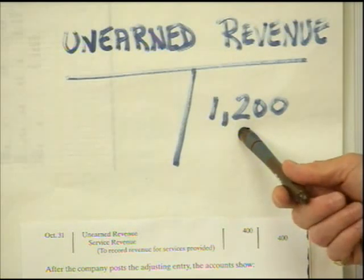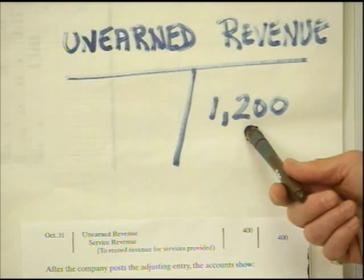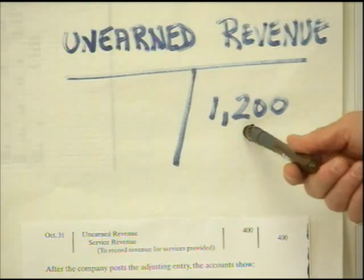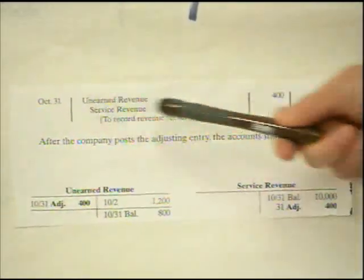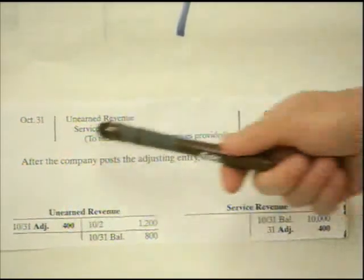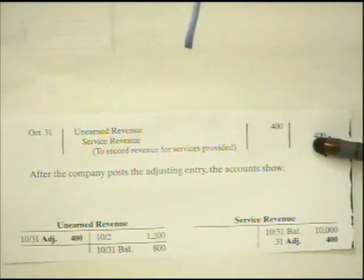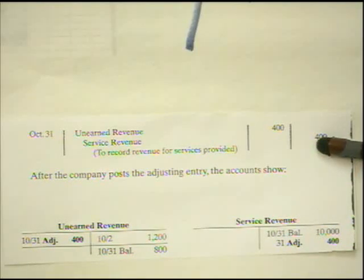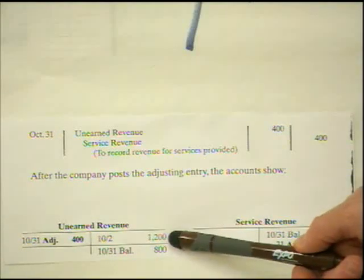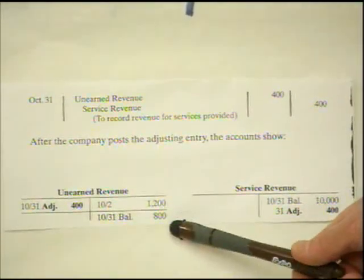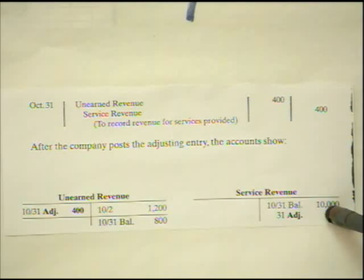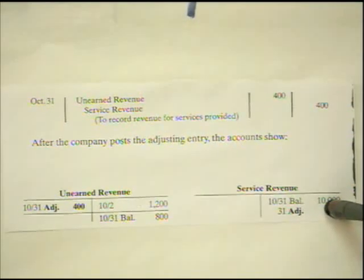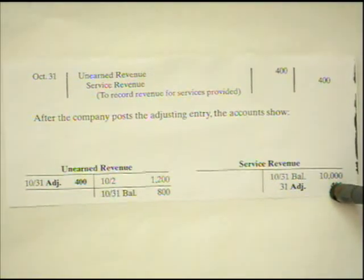Let's say we're producing six units at $200 each — six times $200 equals $1,200. At the end of the month, if we've produced two of those units, we've earned $400. The entry: debit unearned revenue $400, credit service revenue $400. This removes $400 from the liability and records it as earned. The unearned revenue account goes from $1,200 down to $800. We also already had $10,000 in service revenue, so we've now added an additional $400.